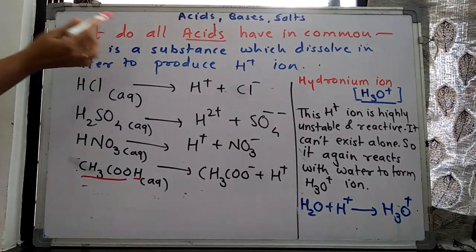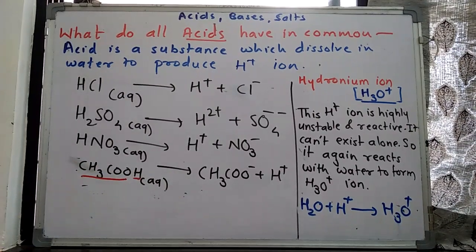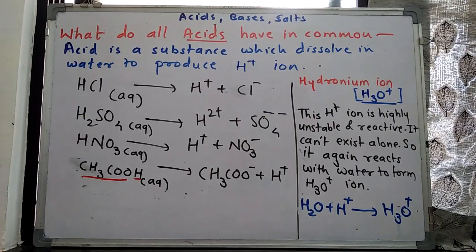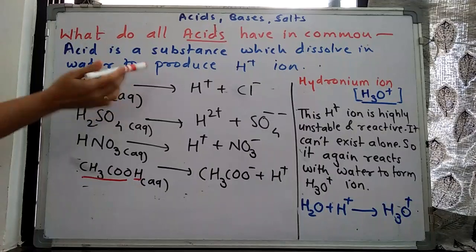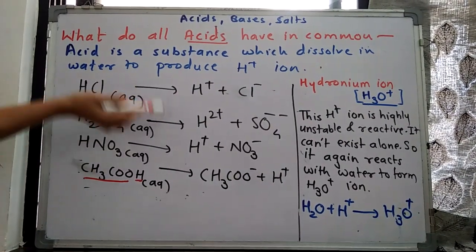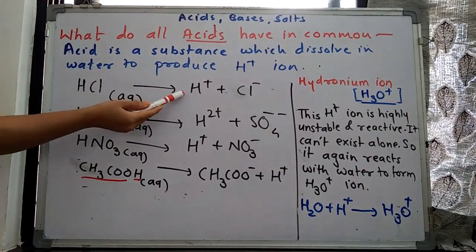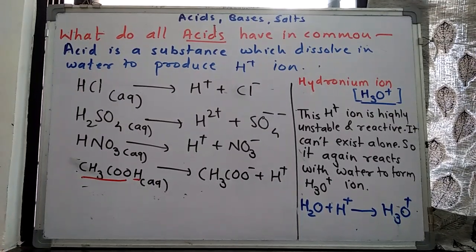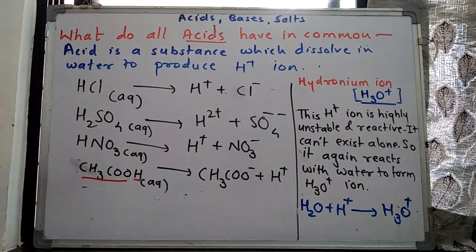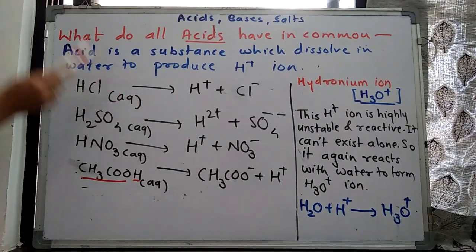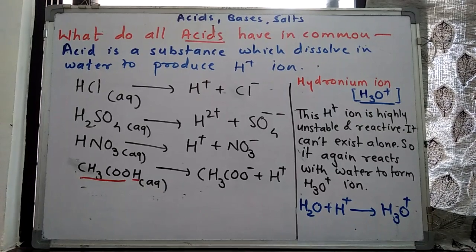What do all acids have in common? All acids produce H+ ions. HCl produces H+ ions in water, but H+ ions are highly reactive and unstable — they cannot exist alone. So the H+ ion reacts again with water to form a new type of ion called the hydronium ion, with the formula H3O+. The reaction is: H2O + H+ → H3O+.